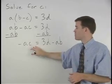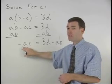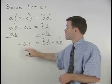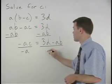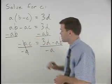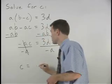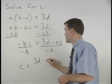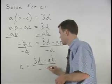Finally, to get C by itself, since C is being multiplied by negative A, we simply divide by negative A on both sides of the equation. And on the left, the negative A's cancel, and we have our answer. C equals 3D minus AB over negative A.